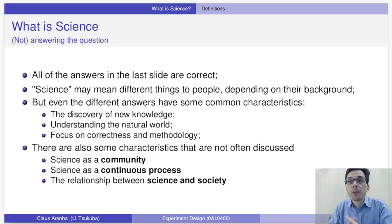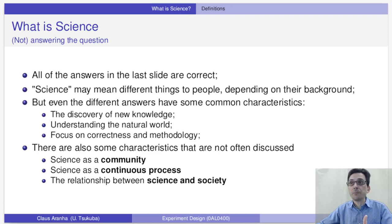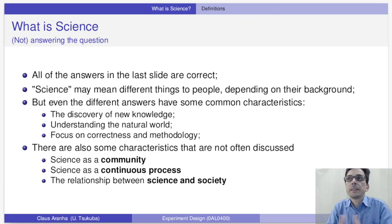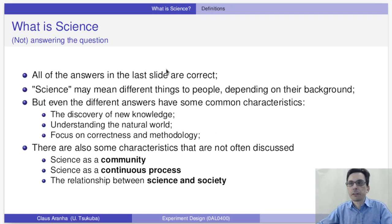So, what is science? Well, this question is actually very open, and I would say that all answers from the students are correct to a certain degree. Science is a word that means different things to different people, different groups, different societies, and different times in history. So it's not really surprising that students have different answers. But if we look at the different answers, we're still going to see some common characteristics.